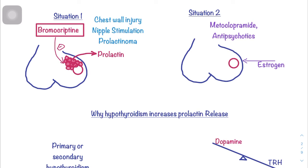Another situation with excess prolactin is when estrogen is high — as in pregnancy or with the use of oral contraceptive pills — causing excess prolactin production.